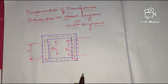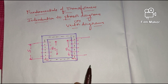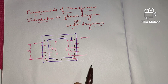First of all let me define the transformer. It is basically a static AC machine which is going to convert the voltage levels from one level to the other. That means from high level to low level it is known as a step down transformer, and when the voltage is converted from low level to high level it is known as a step up transformer.